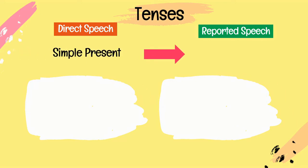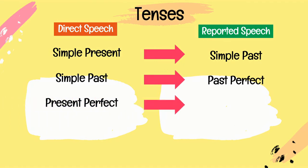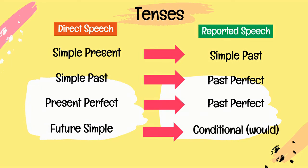Now, the changes in tenses. For direct speech in the simple present, the reported speech changes the sentence into simple past. Simple past changes into past perfect. Present perfect changes into past perfect. Future simple becomes conditional — 'would.' Modals remain the same.